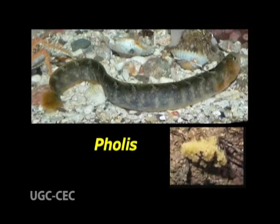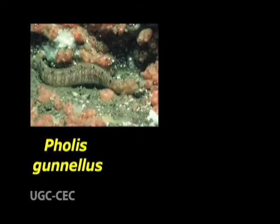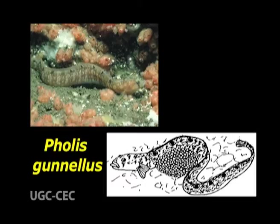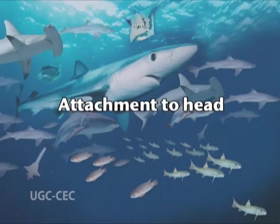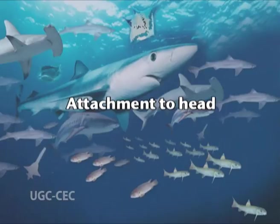Coiling around eggs: in Pholis the eggs are rolled into a rounded ball and one parent — the male — guards the egg ball by coiling around it. Butterfish, Pholis gunnellus, lays eggs in clumps of a few hundred. The eggs are fertilized and guarded by the male until they hatch, about one month later.